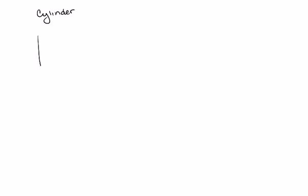In this video we're going to continue on with volume. We're going to look at three more figures. The first one we're going to look at is the cylinder. The cylinder is very similar to the prism in the sense that they both have a pair of opposite identical faces that are bases.